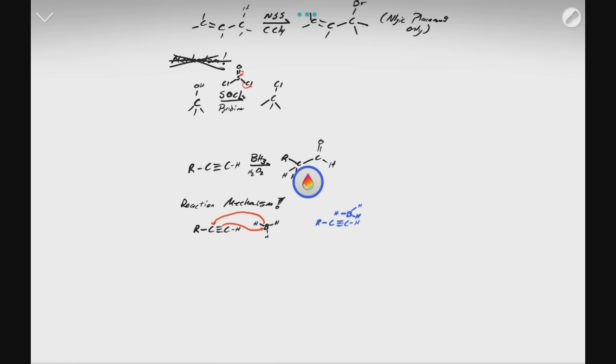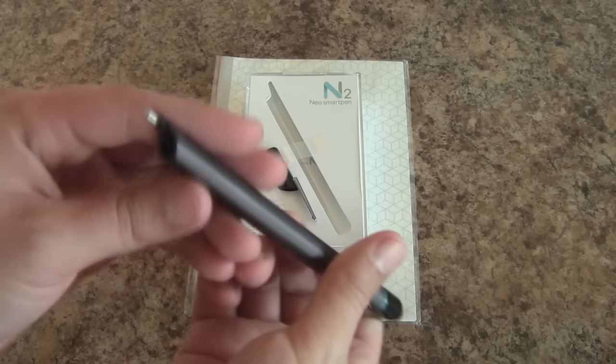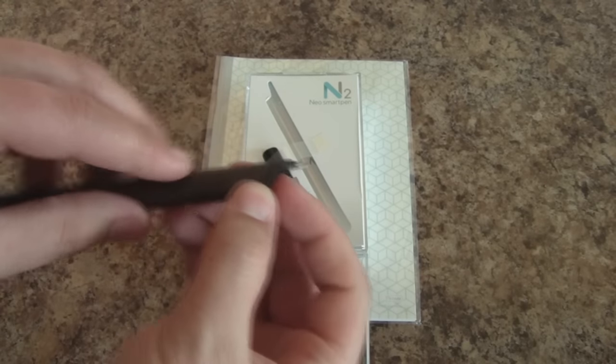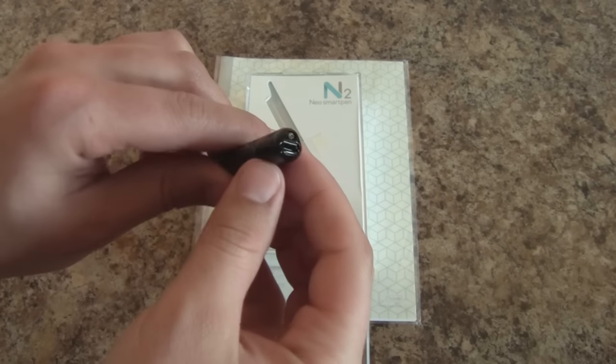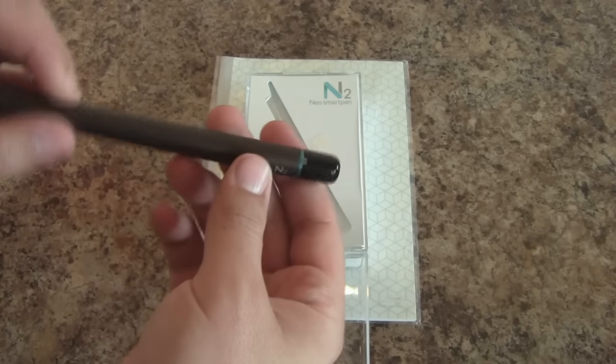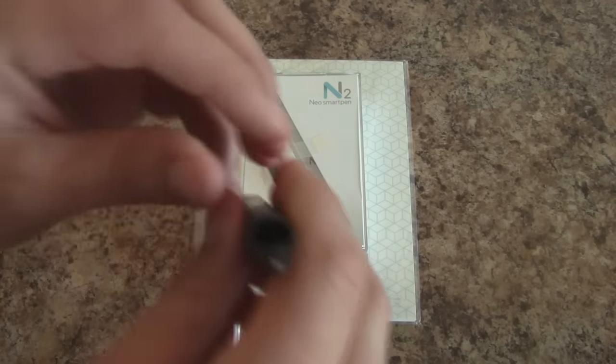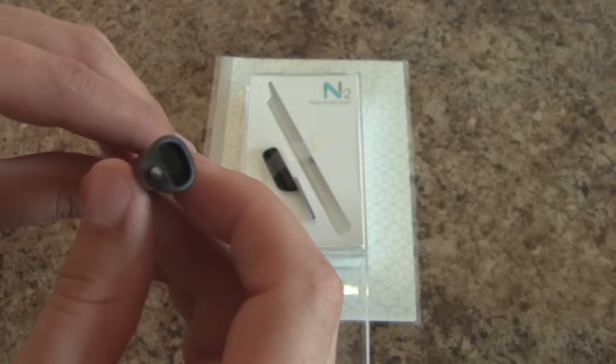Now, if we start by taking a look at the pen, we can start to understand how this all works together. It takes a rather standard ink cartridge, and while it can take many different types, you are advised against using certain gel-type ink cartridges that might interfere with the data capture. Below the pen, it has some style of optical sensor that captures the data.